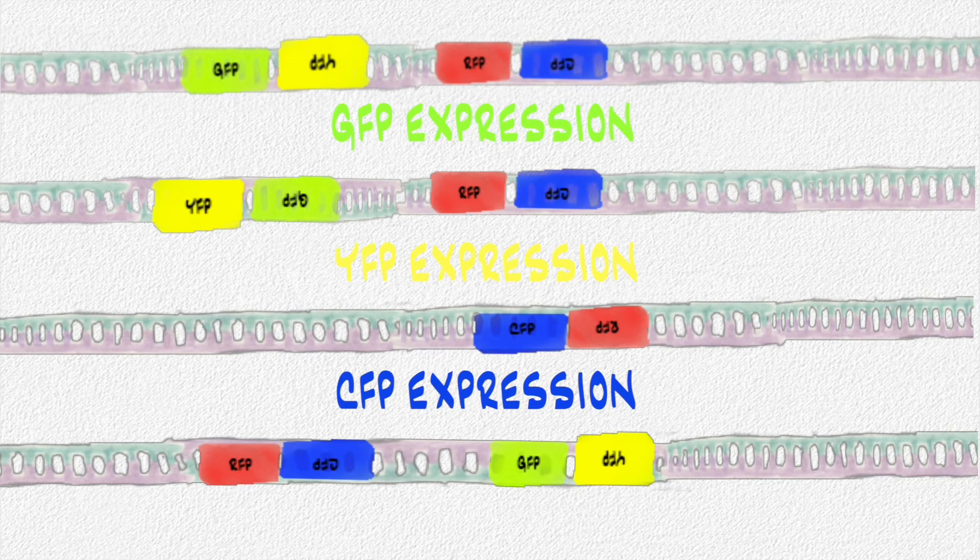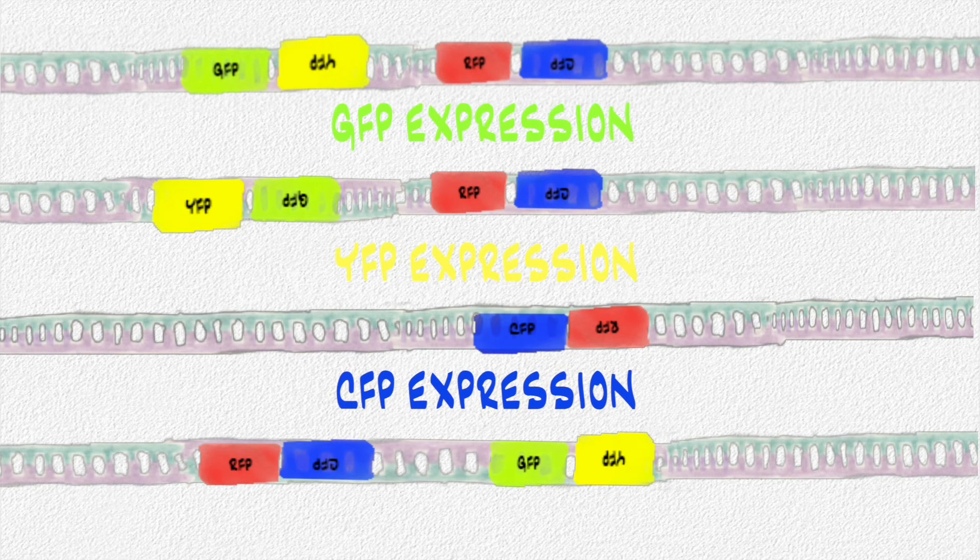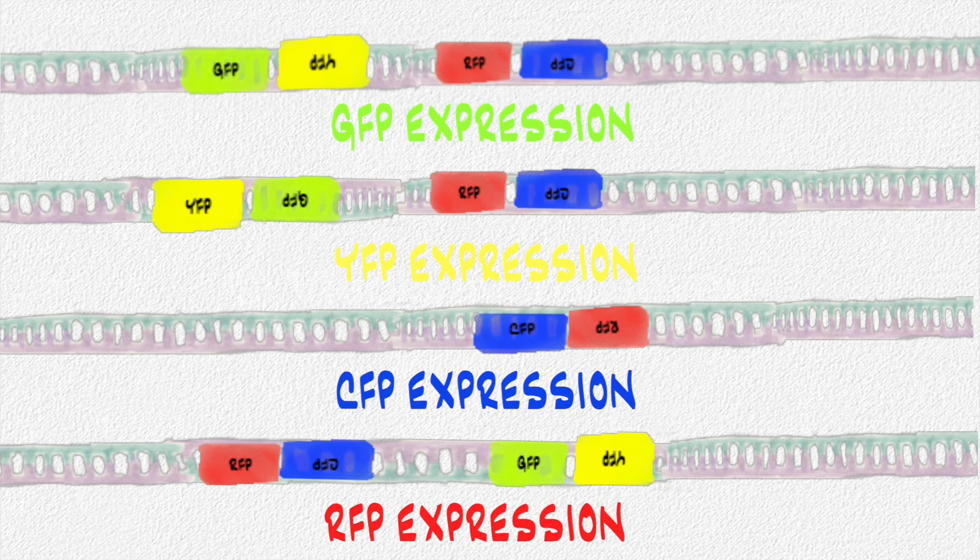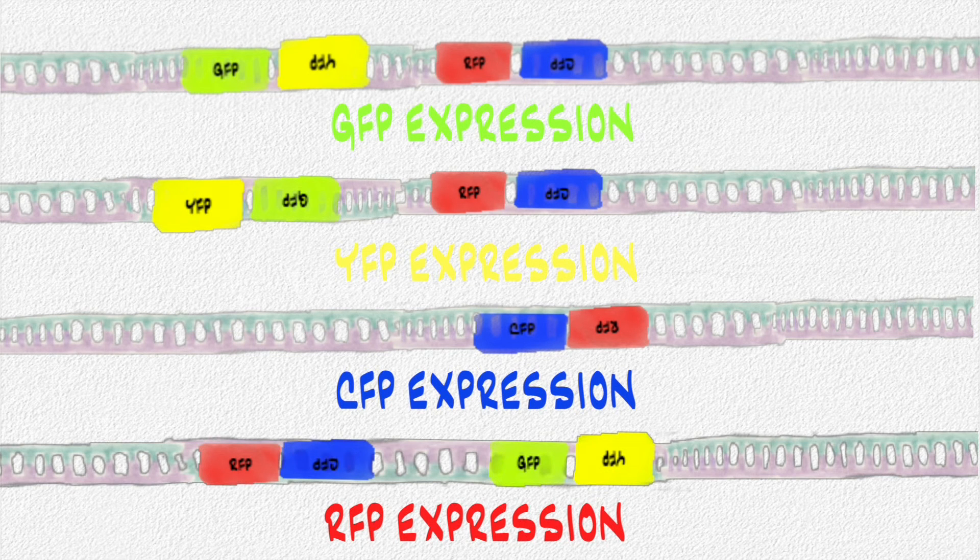Different neurons may express different levels of fluorescent protein, depending on how the LOXP sites are set up. Thus, they can have unique colors. This allows us to better look at individual neurons and differentiate them from each other easily.